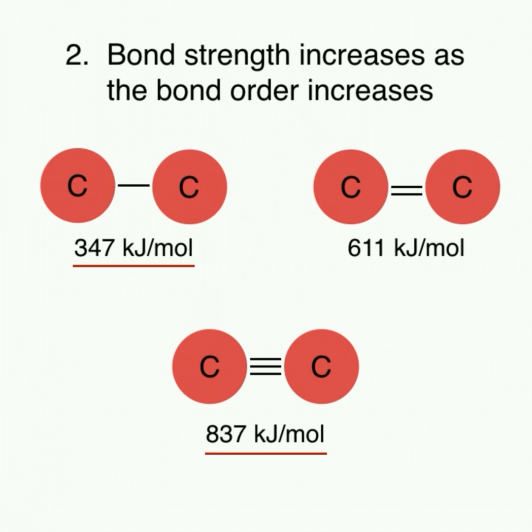Similar to atomic size, bond order also affects the bond lengths of covalent bonds. As we can see here, as the bond order increases, the bond length decreases, meaning atoms that are connected with more bonds are held closer together.